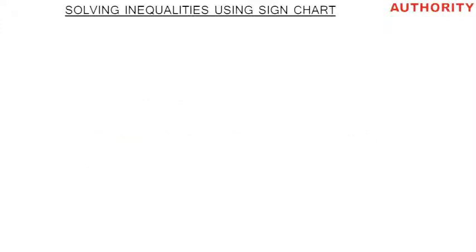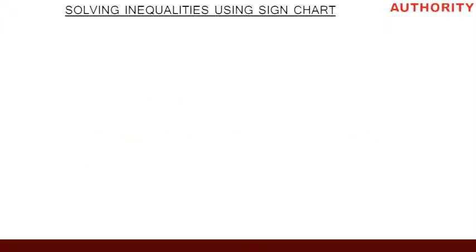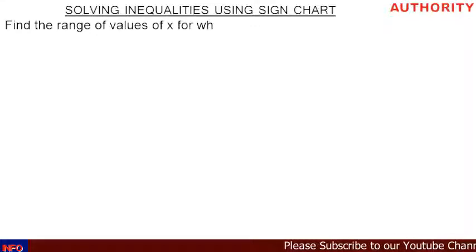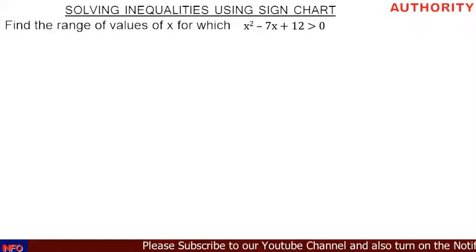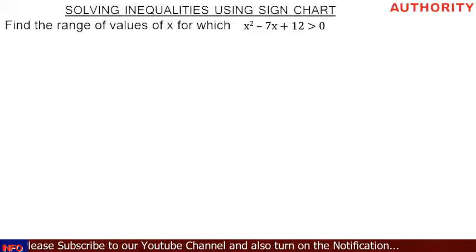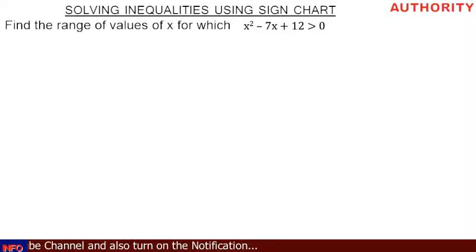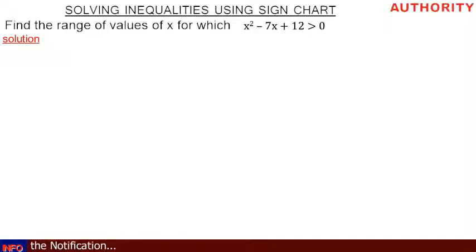Welcome again. Today let's talk about solving inequalities using a sign chart. Let's take this question: find the range of values of x for which x squared minus 7x plus 12 is greater than zero. Please pay attention.